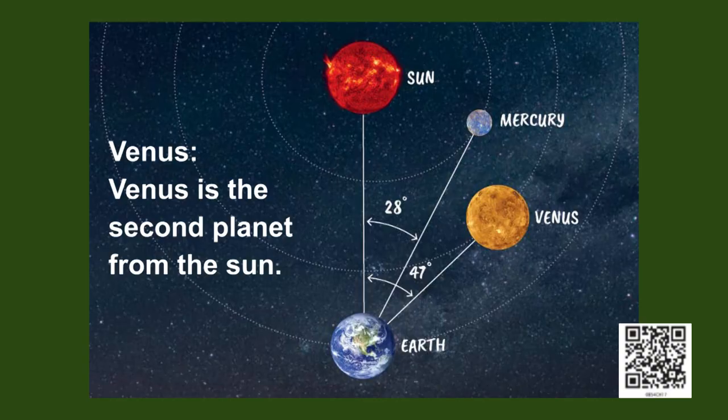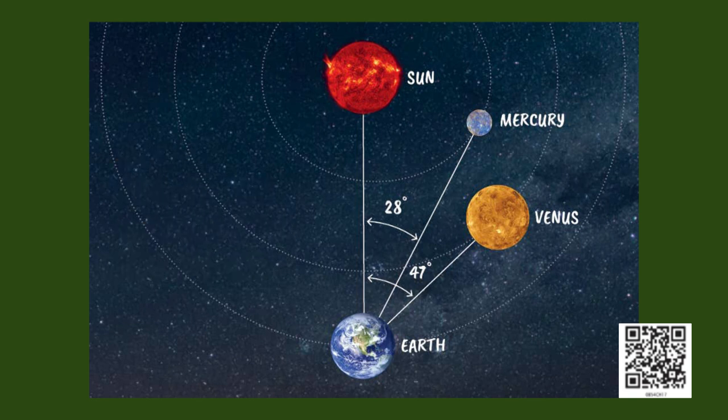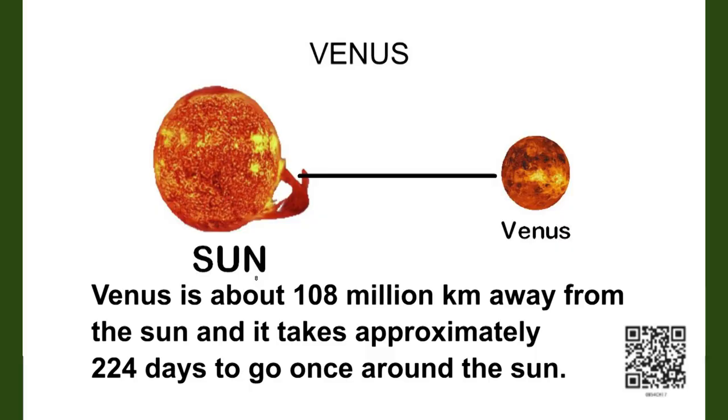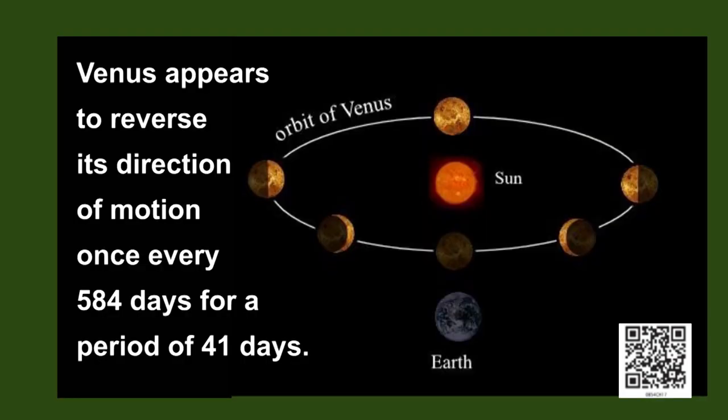Let us now look at the second planet in the solar system, Venus. Venus is also our nearest neighbor and hence it is one of the brightest planets visible in the night sky. Venus is about 108 million kilometers away from the sun and it takes approximately 224 days to go once around the sun. This means looking from the earth, Venus appears to reverse its direction once every 584 days for a period of 41 days. This is called the retrograde motion of Venus.